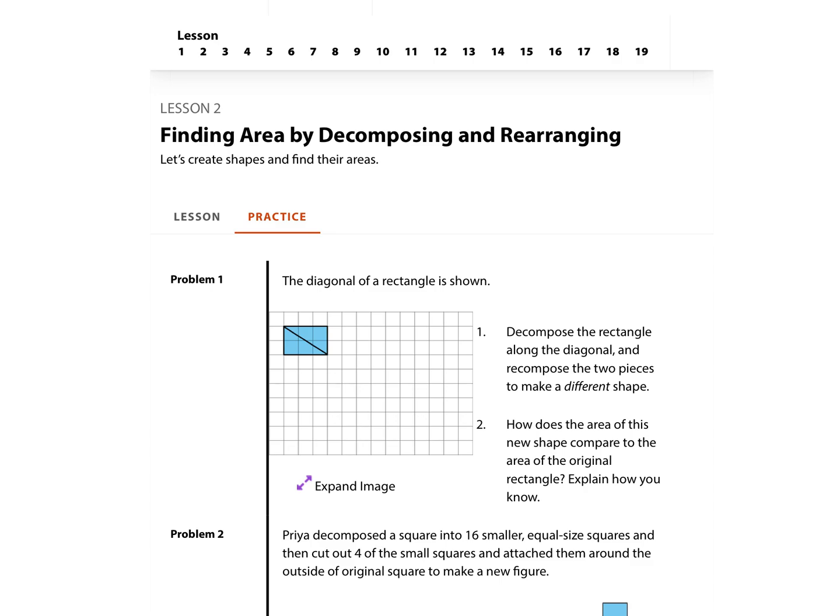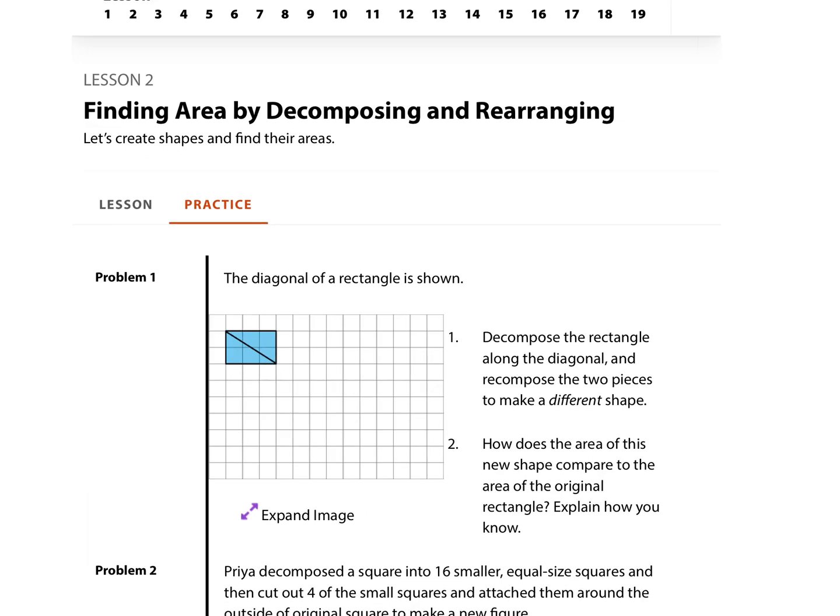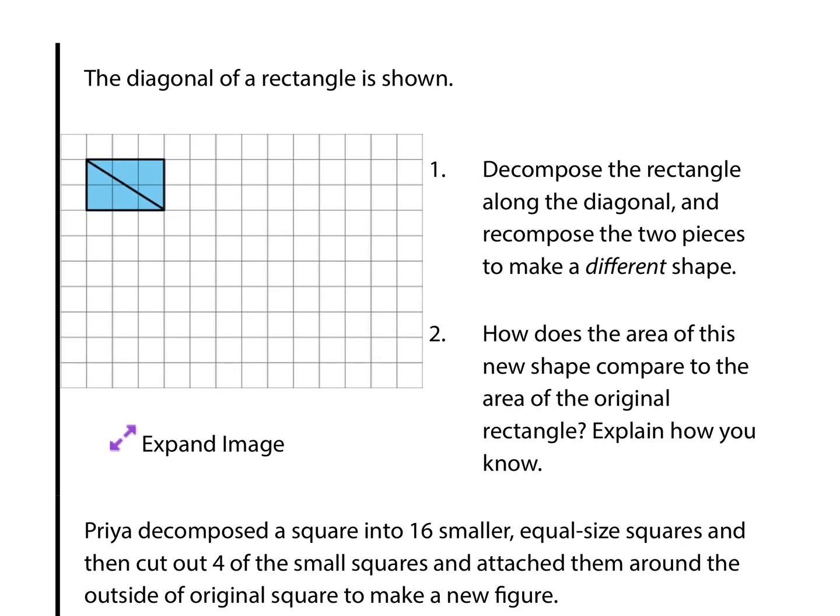In question 1, the diagonal of a rectangle is shown. Decompose the rectangle along the diagonal and recompose the two pieces to make a different shape. What if I just take this triangle piece here? I'm going to draw it 1, 2, 3 across, and 2 down, and then connect. To make a different shape, what if I take this one that is also, if you notice here, 2 down and 3 across. What if I go 3 across, and we already have the 2 down, and connect it there? That's one possibility.